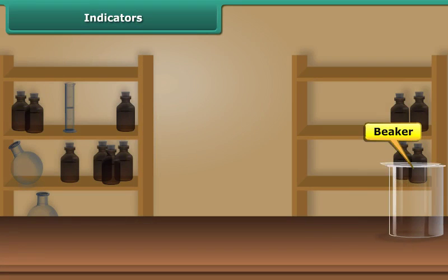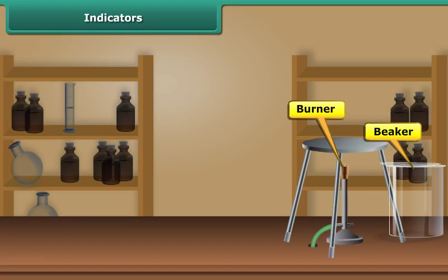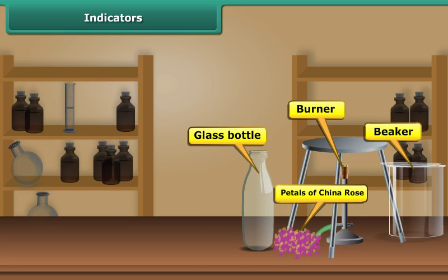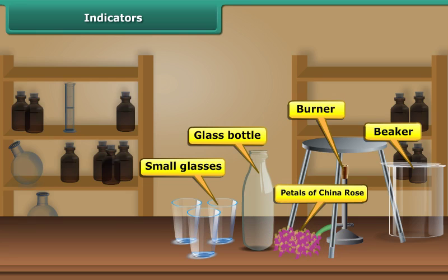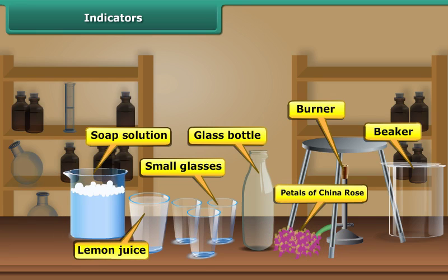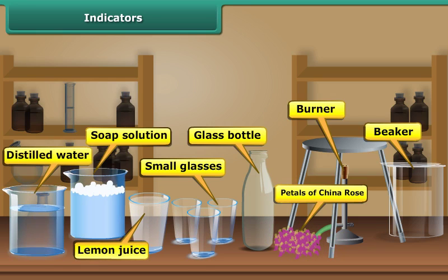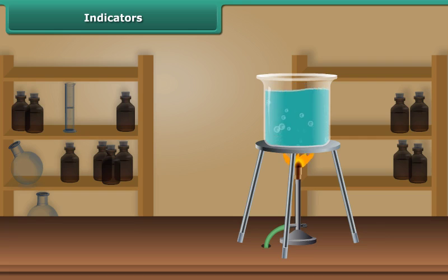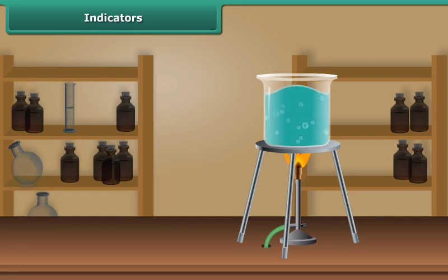You will need a beaker, gas stove, petals of china rose, a clean glass bottle, three small glasses, lemon juice, soap solution, and distilled water. Pour some distilled water in a beaker and heat it on the gas stove.